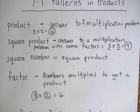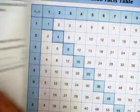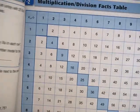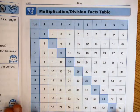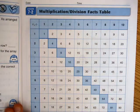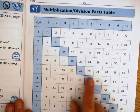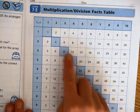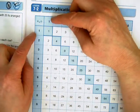Today we're going to be looking in our math books at a couple of different visual pieces. One of these is a multiplication and division facts table. In the multiplication and division facts table, all of the square numbers are highlighted in blue so that you can see what the square numbers are.